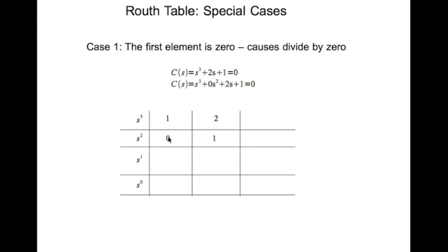The coefficient of s squared, which is 0. Skip 1 power of s, 1. It's a constant term. It comes here. Now, I can't find this entry because this entry would be this 0 times 2 minus 1 times 1 divided by 0.